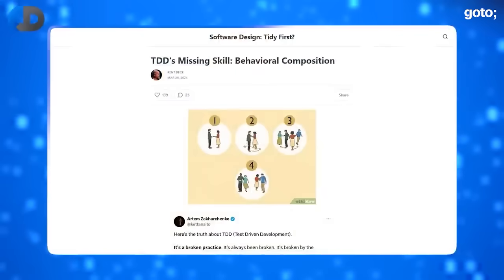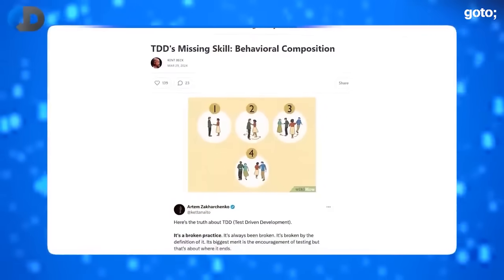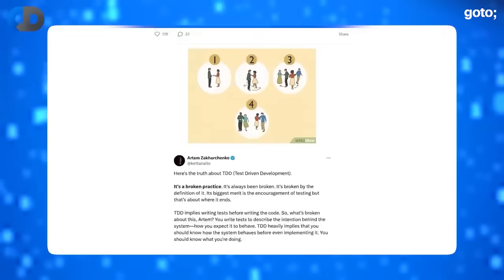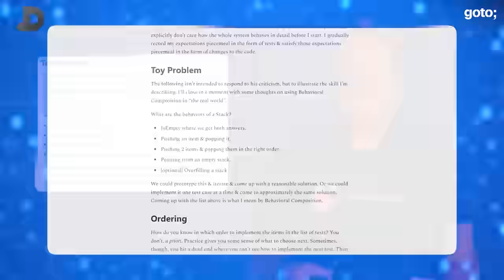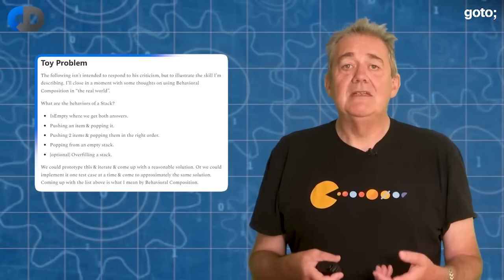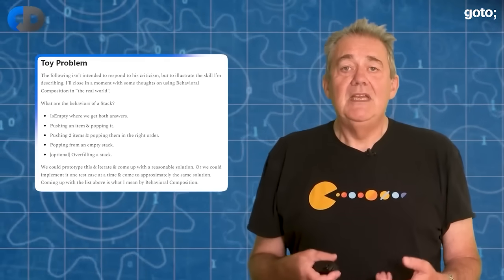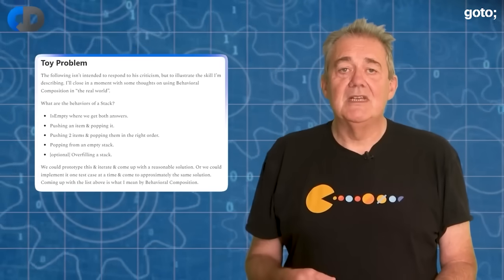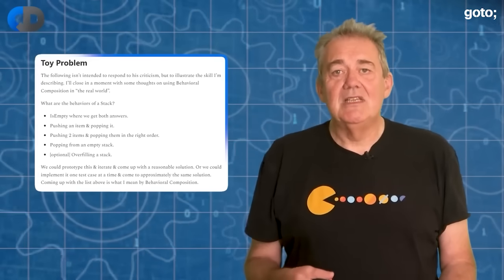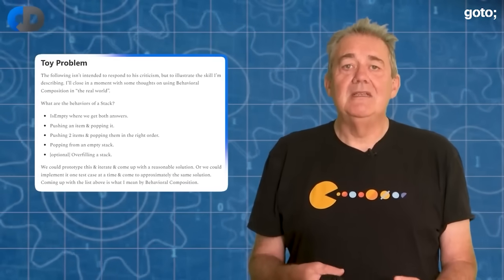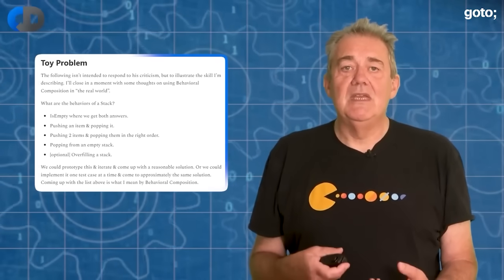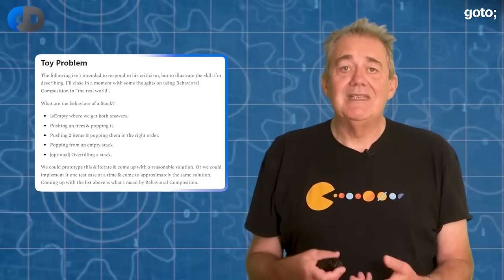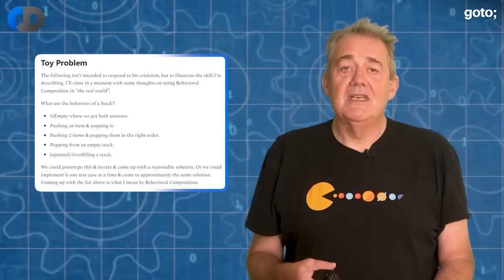I saw Artem's tweet because Kent Beck responded to it on Twitter. Kent outlines his take on the importance of small steps with a simple example showing how we can make progress in unplanned, incremental ways — even when we don't have a grand master plan of the eventual destination. I wanted to pick up on essentially the same point of view as Kent but from a slightly different angle. This represents a common anti-pattern that seems to me to be at the heart of Artem's post: imagining the code that you will write when you write the test.